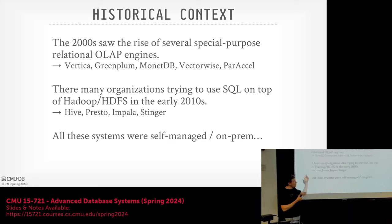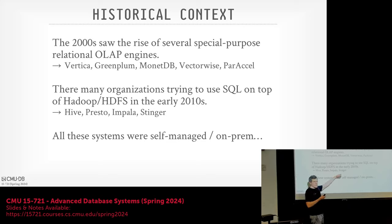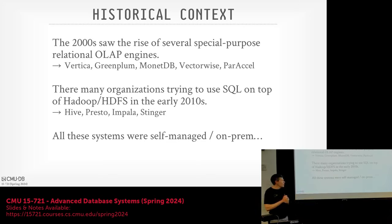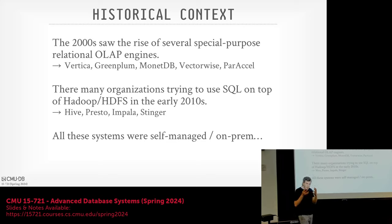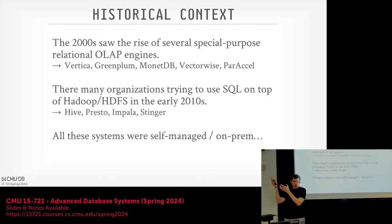At the same time, Hadoop became popular. Everybody was trying to shove a lot of data onto HDFS — it's data lakes before that term came to prominence. Systems like Hive, Presto, Impala, and Stinger were SQL on top of MapReduce. All of these were supporting analytical workloads, but their primary distribution model was downloading and running on-premise. You'd buy a license, provision the hardware, and run it on your local machines.